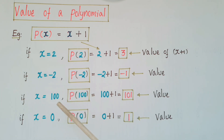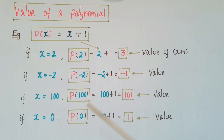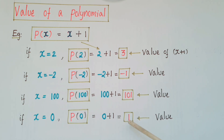Same like that, if x is equal to 100, then the value of the polynomial is 101. And if x is equal to 0, then p(0) = 0 + 1, that is 1. So the value of the polynomial is 1 when x is equal to 0.